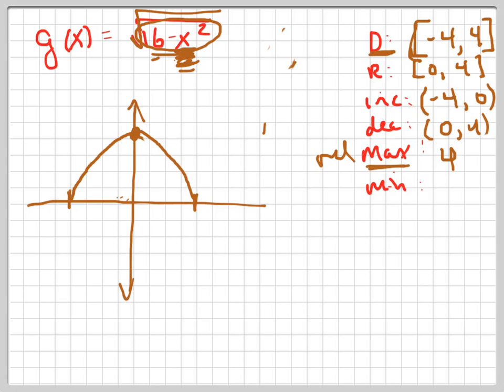So it depends on how they ask for it. If they want the point, then you'd say 0, 4. If they want the value, which I think is what they want. Yeah, you should know that. And the relative mins are going to be 0 because it's going to be down here and down here. And there's two mins. So that's how you graph it.